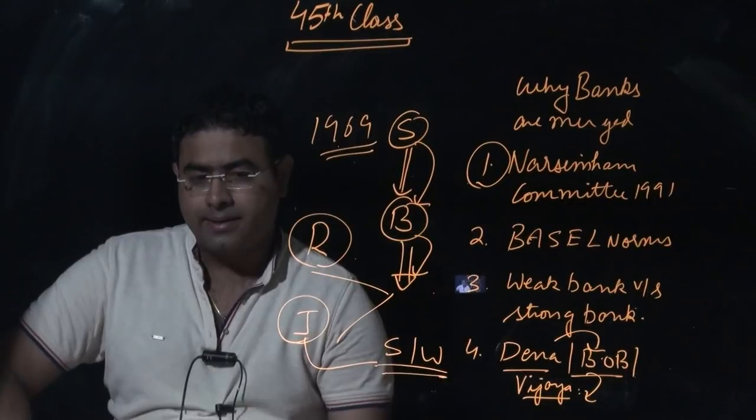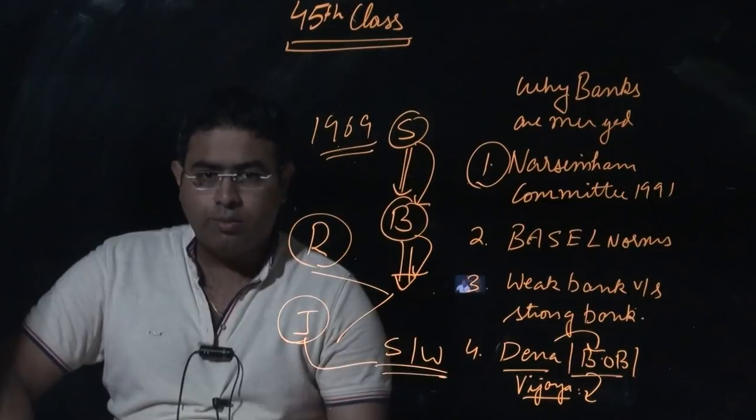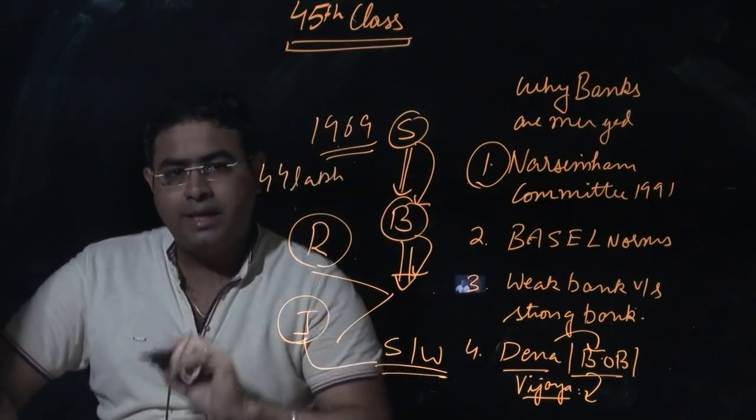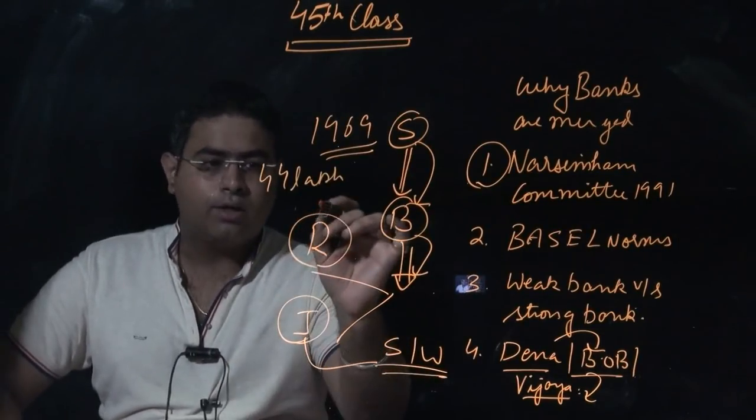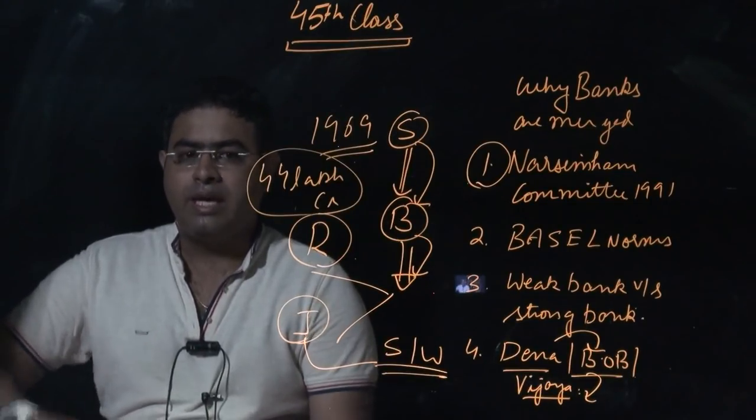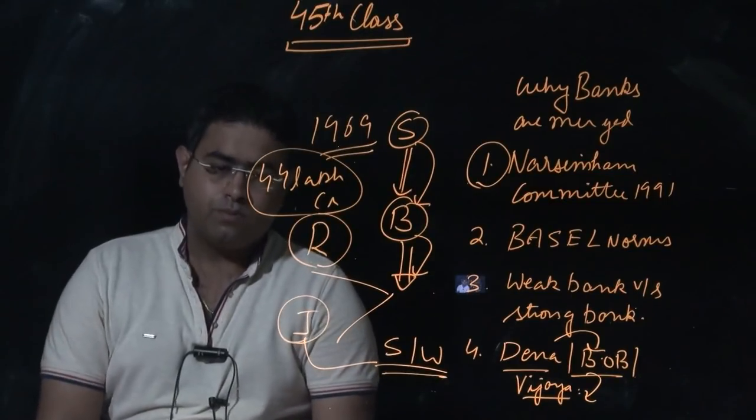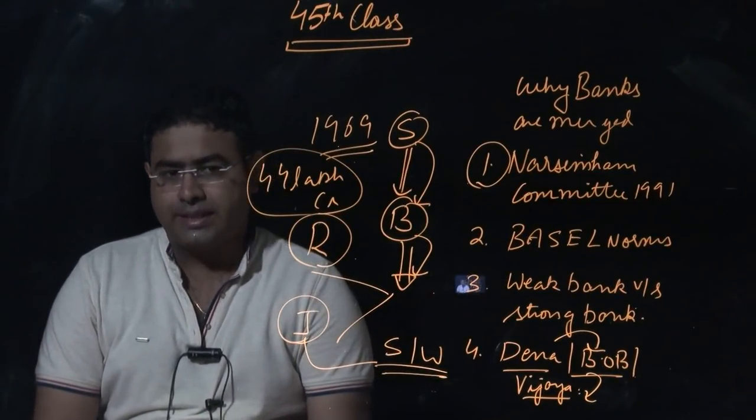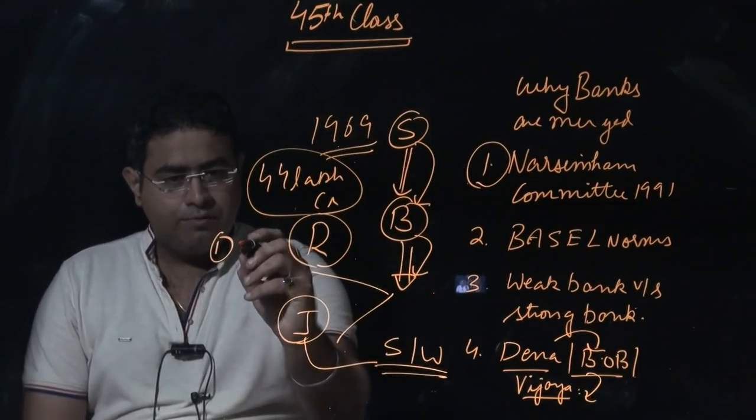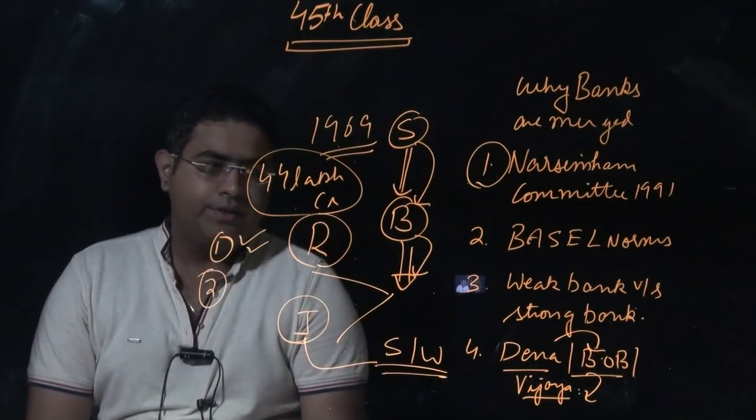By merging these banks, government will be creating a bigger bank with higher net worth. SBI has commented that their total capital is around 44 lakh crore rupees. Now they will have the capacity to lend to other big infrastructural projects. This is one reason - infrastructure lending. Another reason is how to take care of the NPA that is increasing in the banking sector.